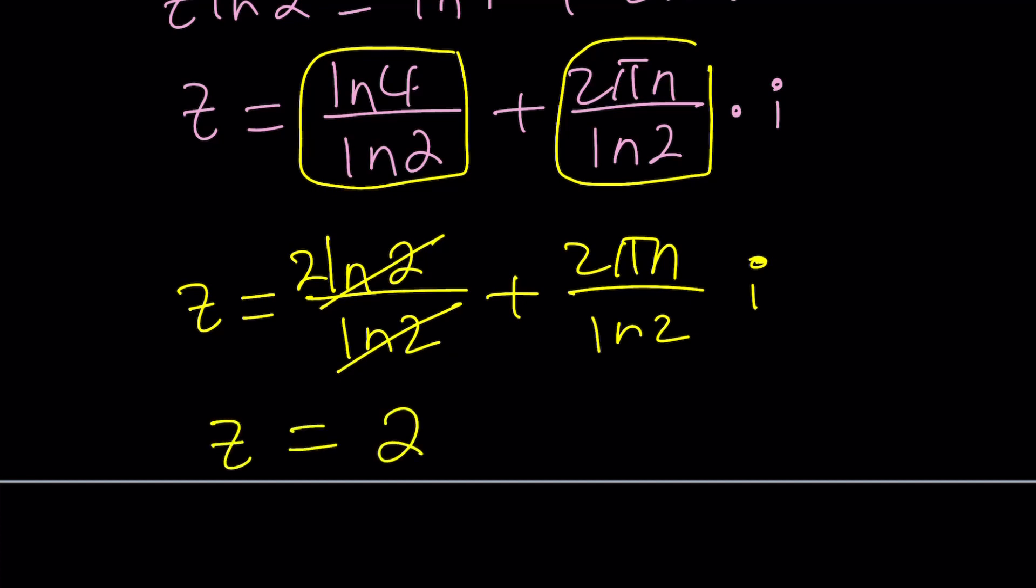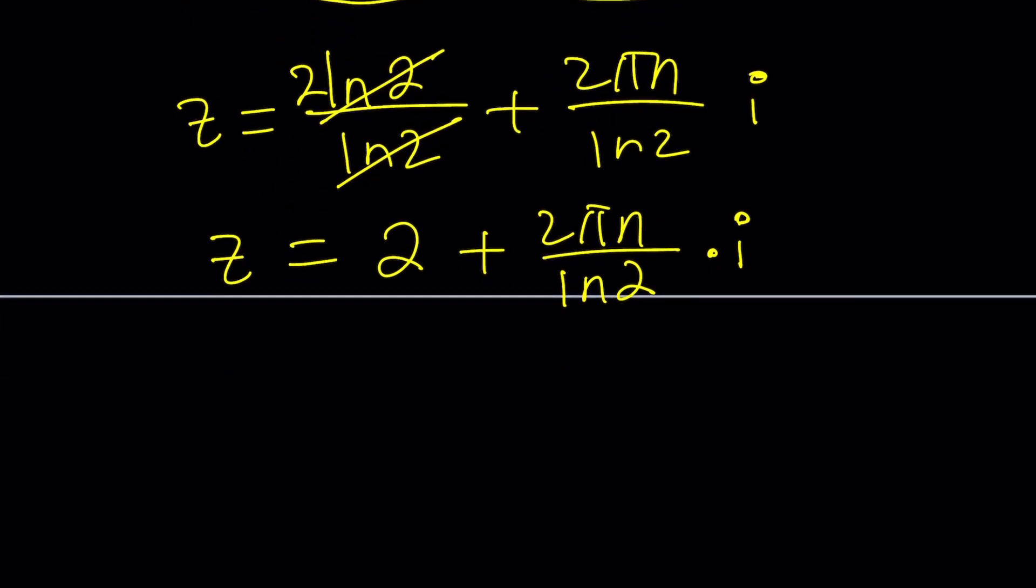So z equals 2 plus 2 pi n over ln 2 times i. So basically, the answer is a complex number in standard form such as a plus bi, where a is the real part and b is the imaginary part. Make sense? So this would be the solution.